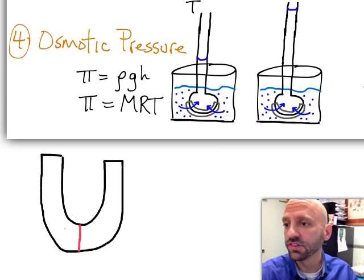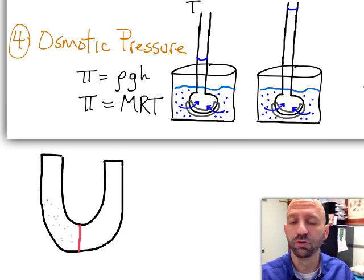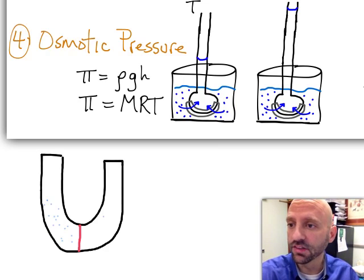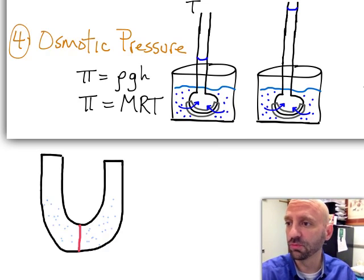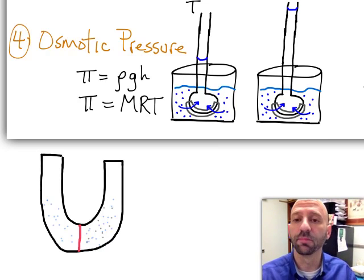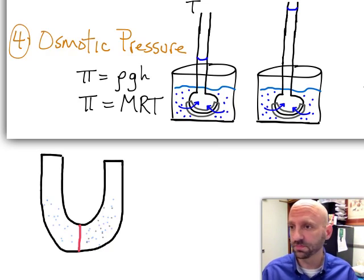And on one side, you're going to have solvent and I'm representing that by a few blue dots. On the right-hand side, we're also going to have our solvent. But we're going to make the right-hand side a solution. So I'm going to put in some black dots, they kind of look gray here actually, some other colored dots to represent solute particles.